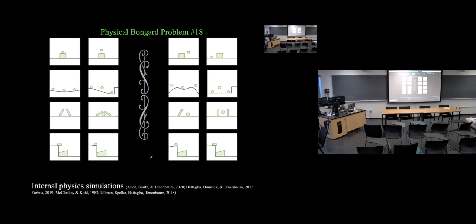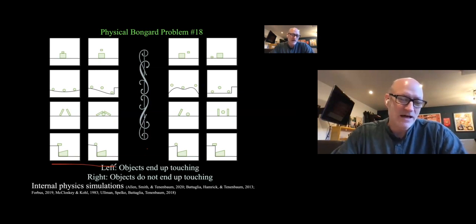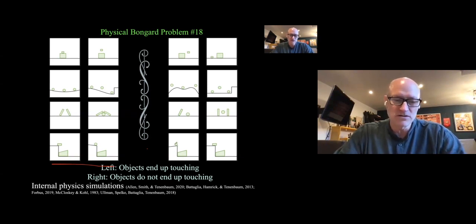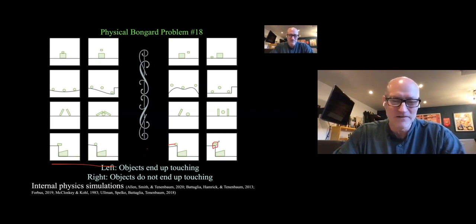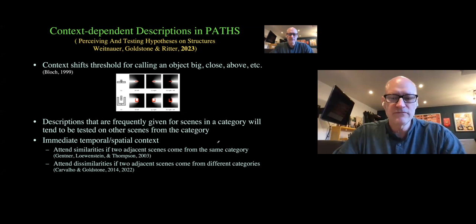On the left, the objects are together after the move; on the right, they are apart. After imagining the forces of physics, on the left the objects would end up touching, whereas on the right they do not end up touching — they'd all be apart from each other. So a small difference means a ball rolls in one direction rather than landing on top. That gives you a good example of a fairly simple physical Bongard problem.